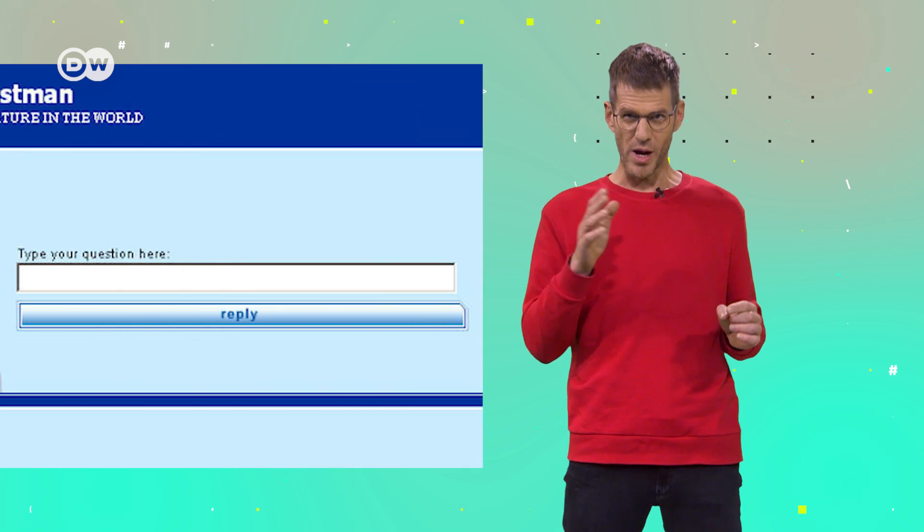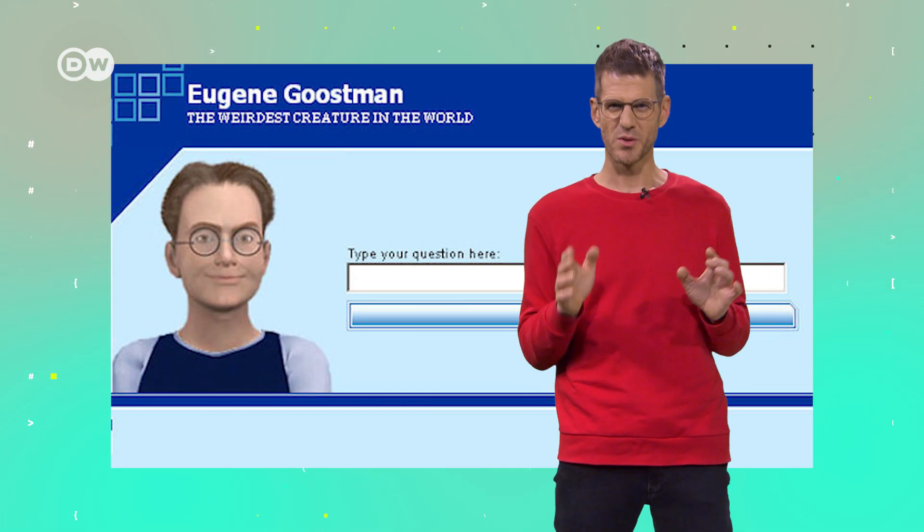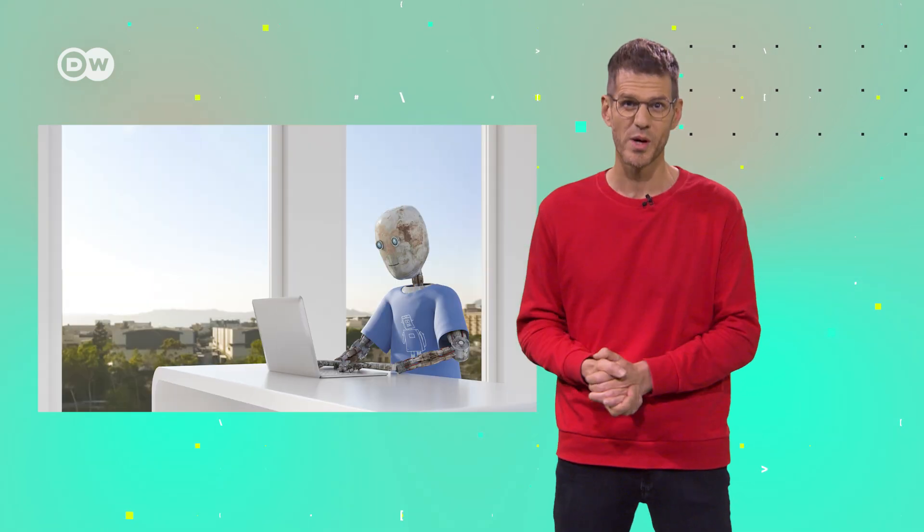In 2014, the Russian chatbot Eugene managed to fool 33% of people into thinking he was human. Some said Eugene passed the test. Others criticized that the program imitated a 13 year old Ukrainian boy whose native tongue isn't English. Some of Eugene's chat logs can be found online. You can find the links down here. When you look at them, you start to doubt that this software is supposed to have human qualities.